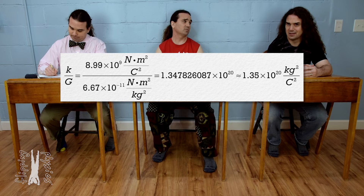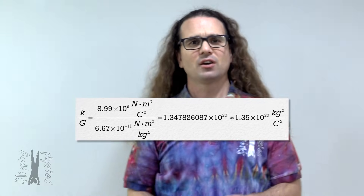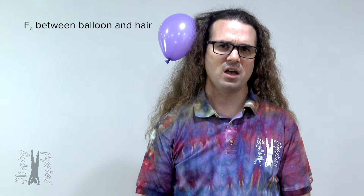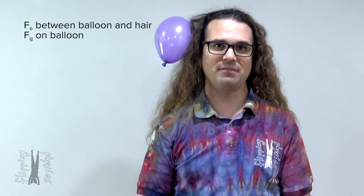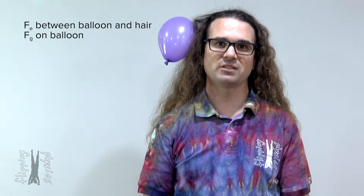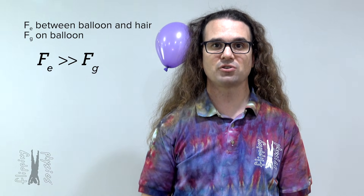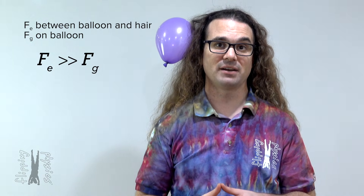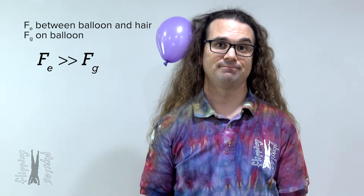The electric force usually wins. Going back to the example from last time, rubbing the balloon on my hair gives the balloon a net negative charge and my hair a net positive charge. That causes an attractive electric force between the balloon and my hair. There is still a force of gravity pulling the balloon down, but the magnitude of the electric force acting on the balloon is so much larger that the balloon sticks to my hair and does not accelerate toward the ground.